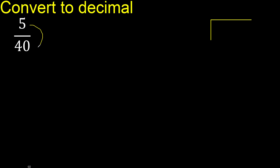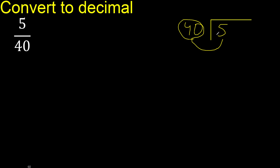5 divided by 40. 5 is less than 40, therefore complete — always complete with 0.